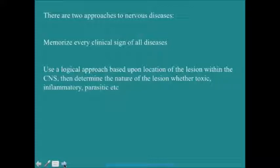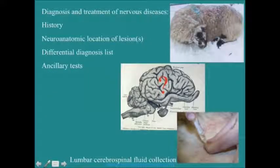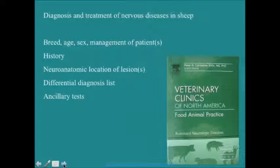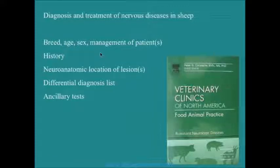What I'm trying to convince everyone of is that rather than memorize every clinical sign of all neurological diseases — which would be very difficult and remarkably boring — we can use a pathological approach based upon the location of the lesion, and then further investigate whether the lesion is toxic, inflammatory, parasitic, et cetera. That is largely based on cerebrospinal fluid sampling. We can localize the lesion to an area of the brain and then collect a CSF sample, usually from the lumbar space. The text I would recommend is the Vet Clinics of North America, edited by Peter Constable, which uses a similar logical approach: breed, age, sex, patient history, neuroanatomic location, differential diagnosis list, and ancillary tests.